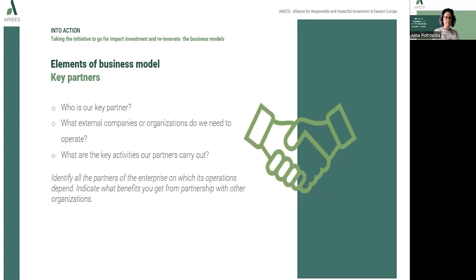Another part of the business model is key partners. We should identify all the partners of the enterprise on which its operations depend and indicate what benefits we get from partnerships with other organizations. The success of the company also depends on key partners — associates, suppliers, and contractors — whose services or products are necessary to operate and offer customers their own value proposition. Key questions include: Who is our key partner? What external companies or organizations do we need to operate? What are the key activities our partners carry out?